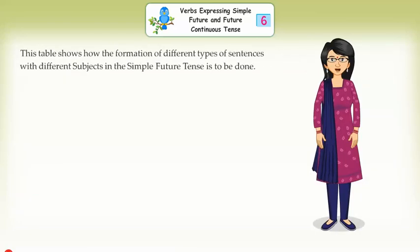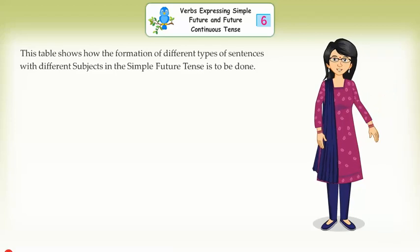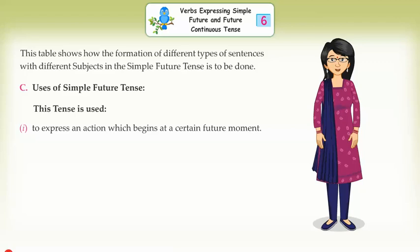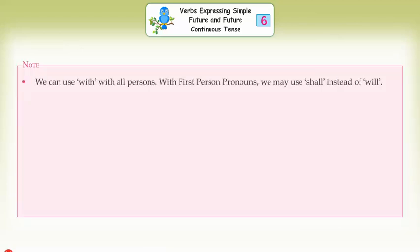This table shows how the formation of different types of sentences with different subjects in the simple future tense is to be done. Uses of Simple Future Tense: this tense is used to express an action which begins at a certain future moment — I shall do this work at 7 a.m. tomorrow; He will come here on Sunday. Note: we can use 'will' with all persons; with first person pronouns we may use 'shall' instead of 'will'. Short forms: will/shall = 'll; will not = won't; shall not = shan't.